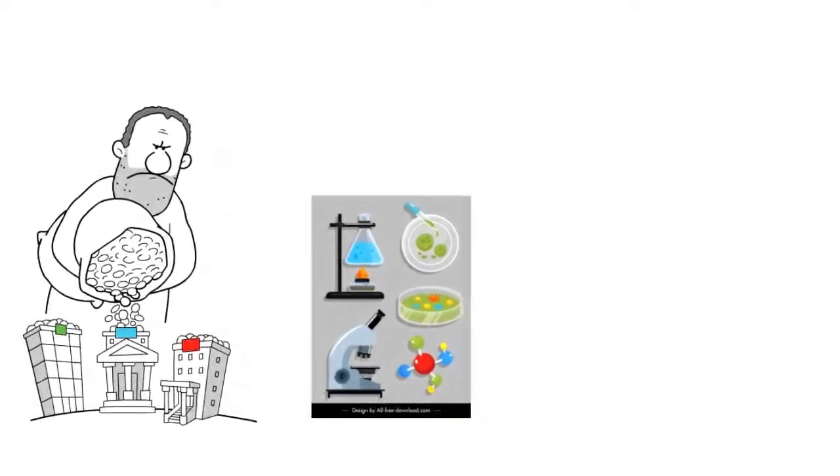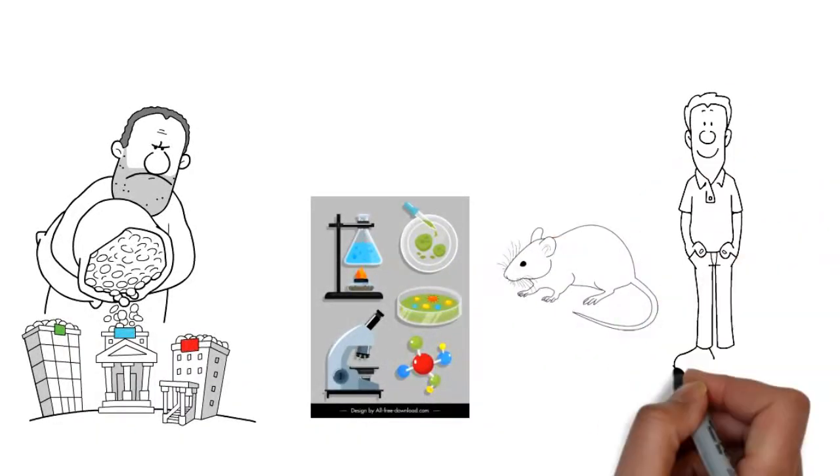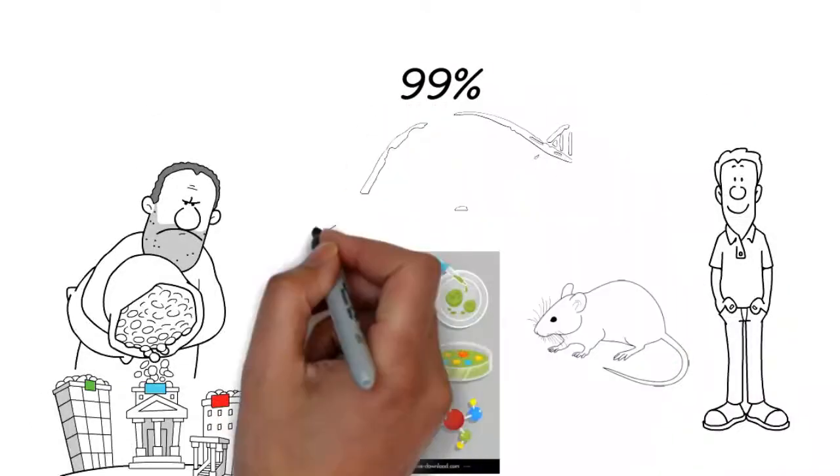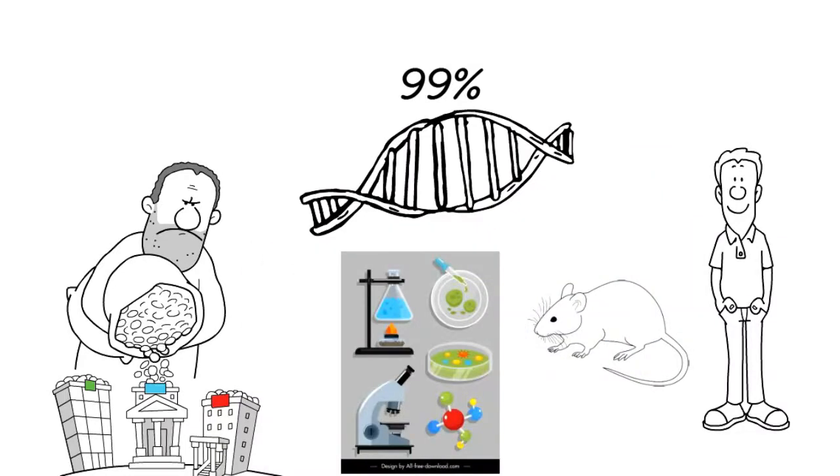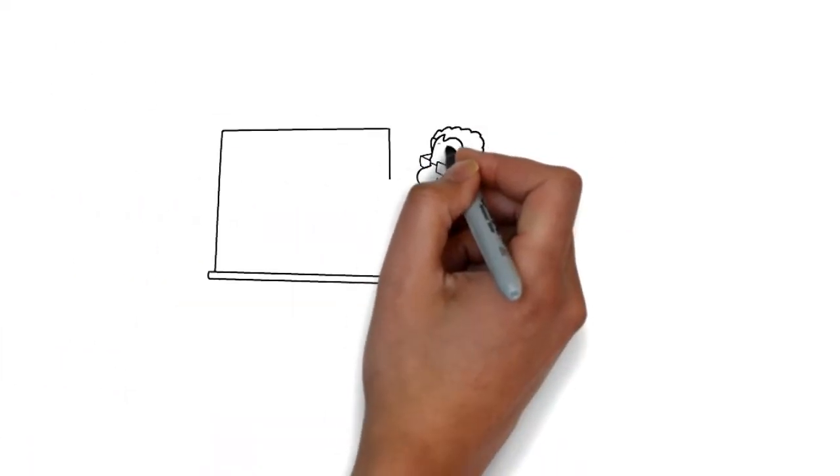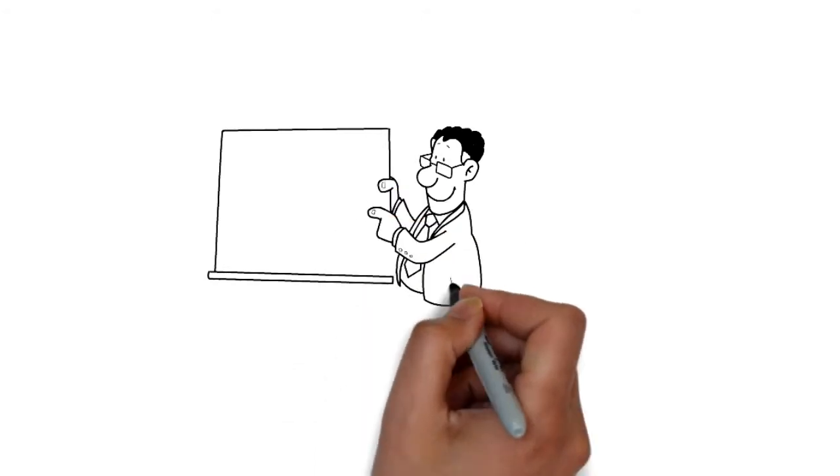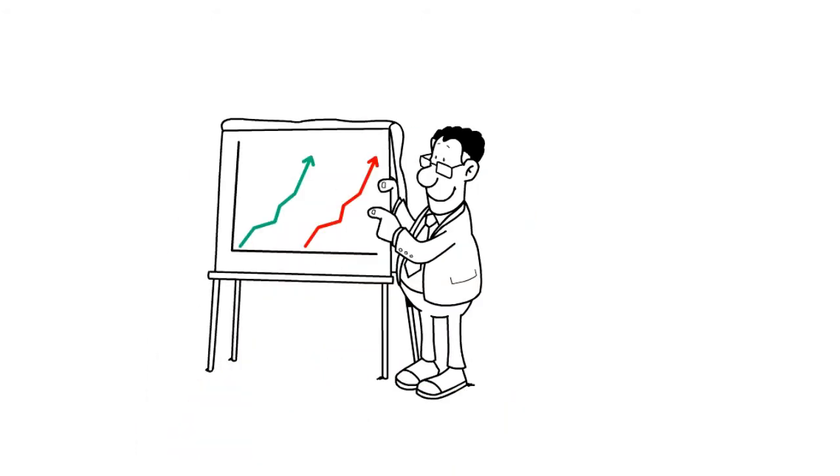The problem is that even though mice and humans are 99% genetically identical, a mouse is not merely a small human. There is still a fundamental difference between us and them, which causes various problems in research.